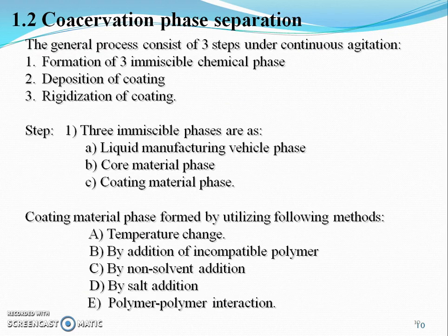Coacervation phase separation: the general process consists of three steps under continuous agitation — formation of three immiscible liquid phases, deposition of coating, and rigidization of coating. The three immiscible phases are the liquid manufacturing vehicle phase, the core material phase, and the coating material phase. The coating material phase is formed by utilizing temperature change, addition of incompatible polymers, non-solvent addition, salt addition, or polymer-polymer interaction.